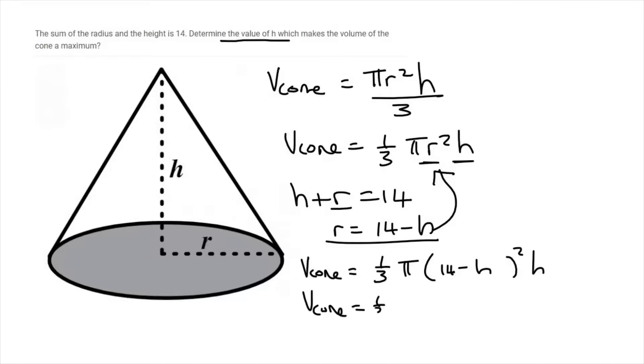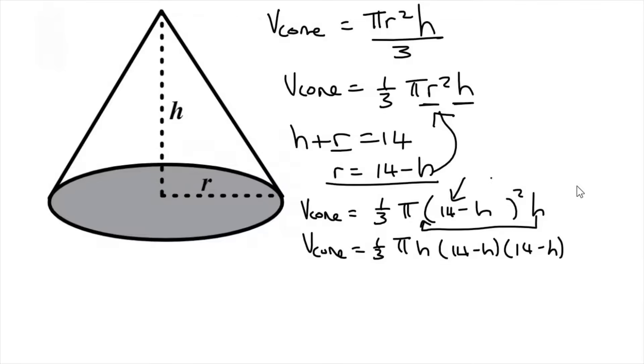So volume cone is going to be a third pi. I'm going to drag this h to the front. Just looks a little bit better. And then 14 minus h, I'm going to put that into two brackets. Be careful never to just say 14 squared and h squared. I see that mistake quite a lot.